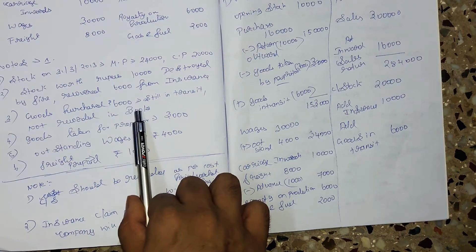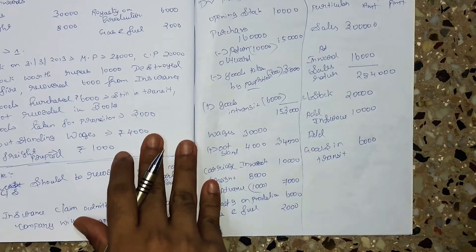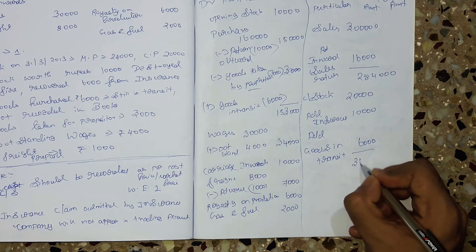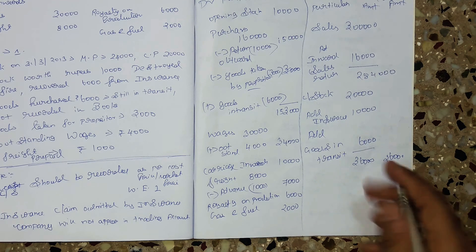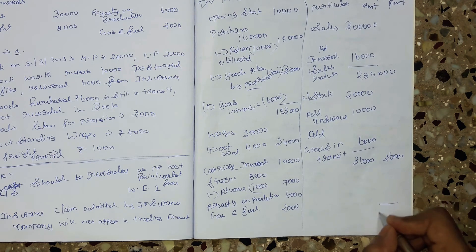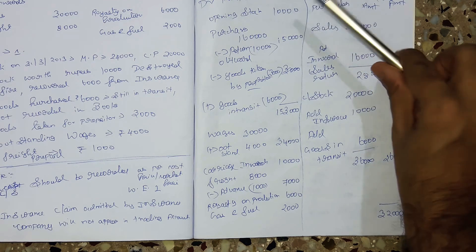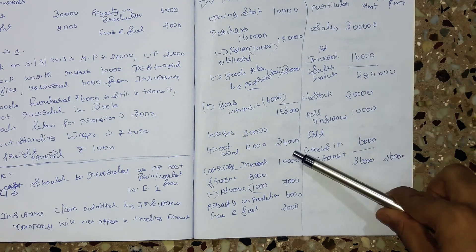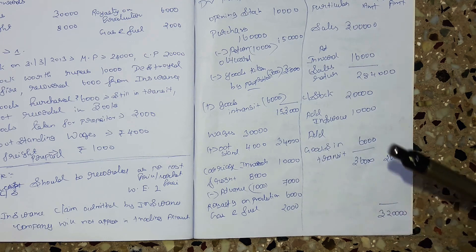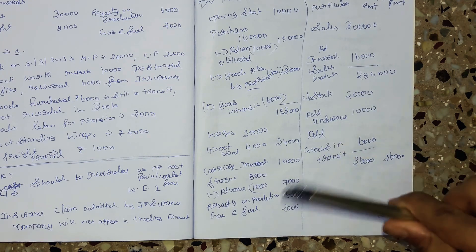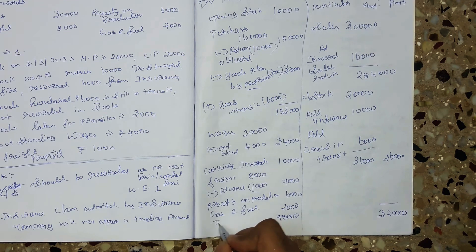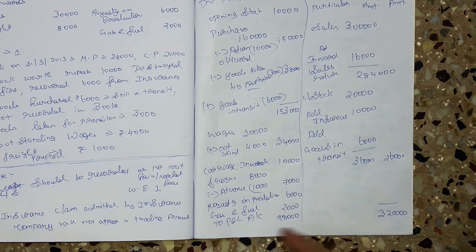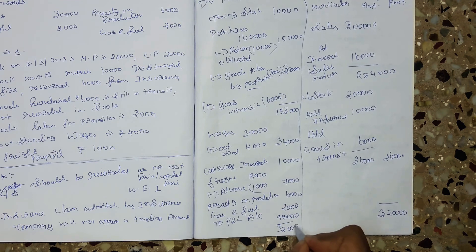Now we are going to add the outer column totals. 2,84,000 plus 36,000 gives 3,20,000 total on the credit side. On the debit side we have: opening stock 10,000, net purchases 1,53,000, wages 34,000, carriage inward 10,000, freight 7,000, royalty on production 6,000, and gas and fuel 2,000. The gross profit is 98,000, which goes to the P&L account.